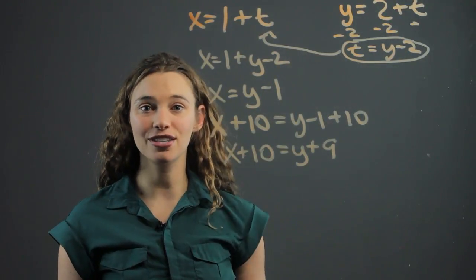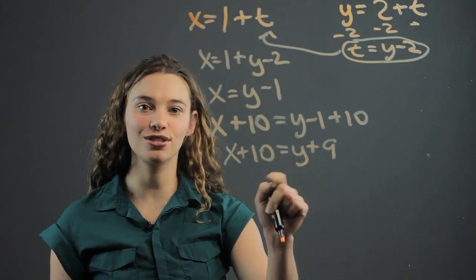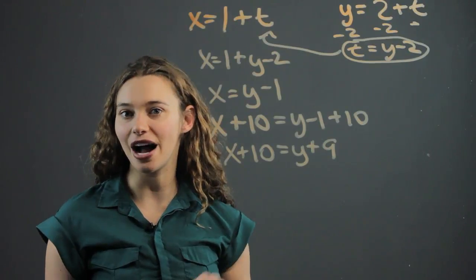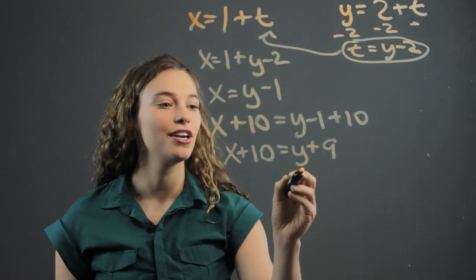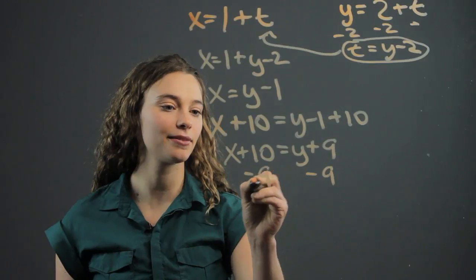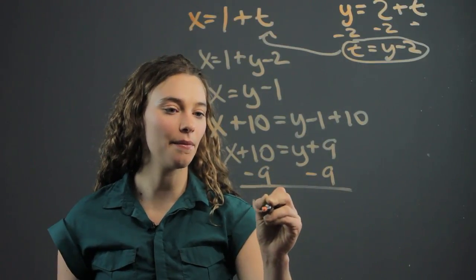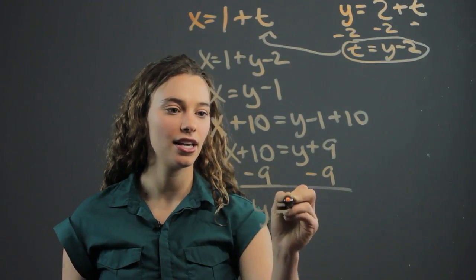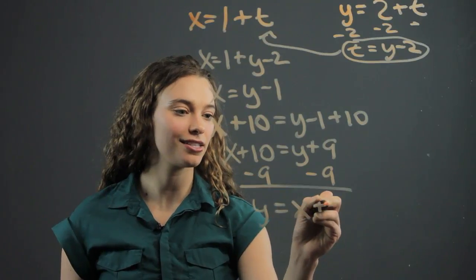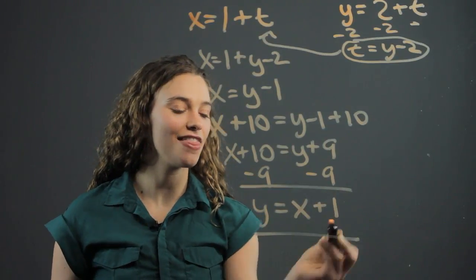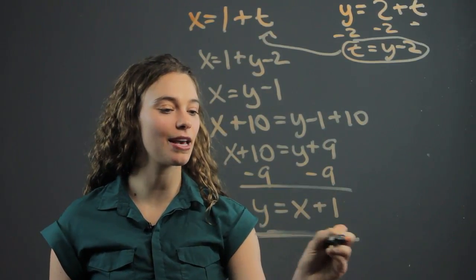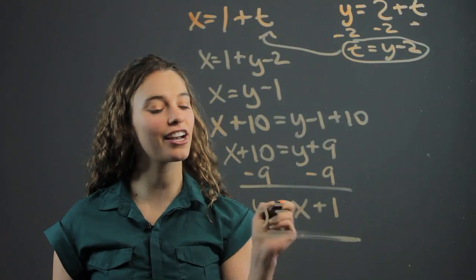So now we just want to solve for y so that we get it into slope-intercept form, which is y equals mx plus b. So we subtract 9 from both sides. And we get y equals x plus 1. And that is our slope-intercept form of the parametric equation.